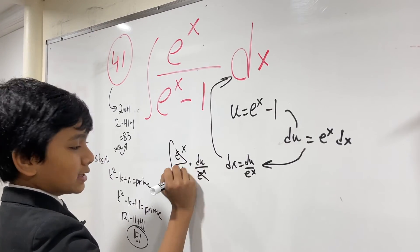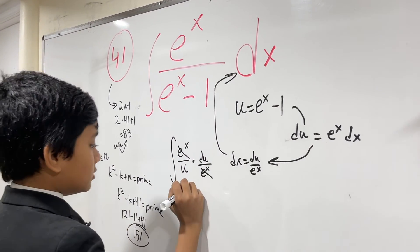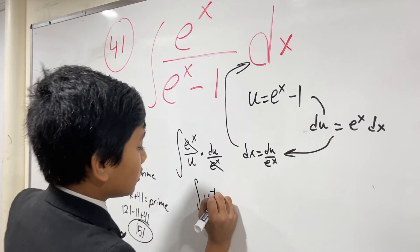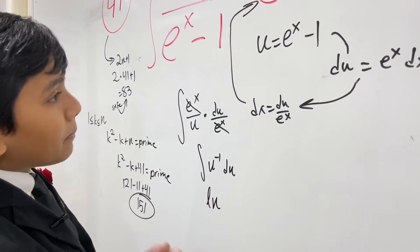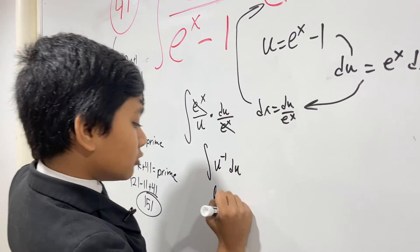Now since this is on the bottom we can rewrite this as u to the minus 1. And using the ln rule we can say that it is ln u. But what is u? e to the x minus 1.